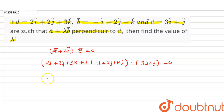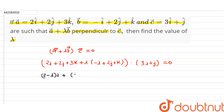When we simplify this, we get the combined vector as (2 minus lambda)i plus (2 plus 2lambda)j plus 3k, and this is dotted with 3i plus j, equals zero.